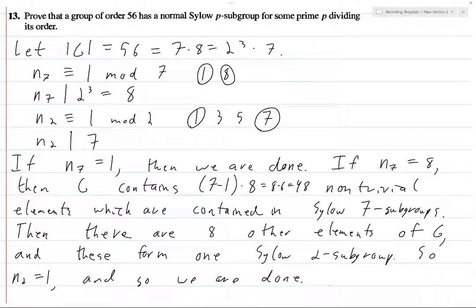And so either there's only one seven Sylow subgroup or there's only one two Sylow subgroup. And whichever one of those happens to be the case, that will give you a normal subgroup. And so there we go. We're done.